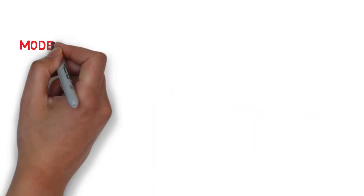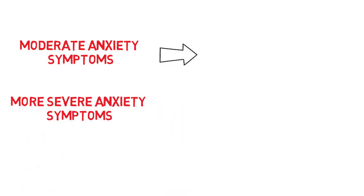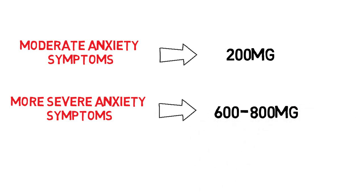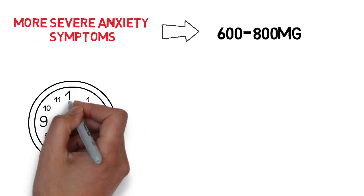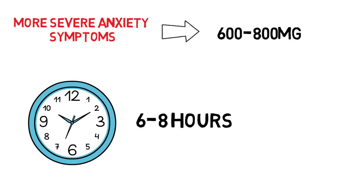Moderate anxiety symptoms often improve with about 200 milligrams once or twice daily. More severe anxiety symptoms may require doses up to 600 to 800 milligrams daily taken in increments of about 200 milligrams spaced over the day. The calming and focused effects lasted about six to eight hours in that study.